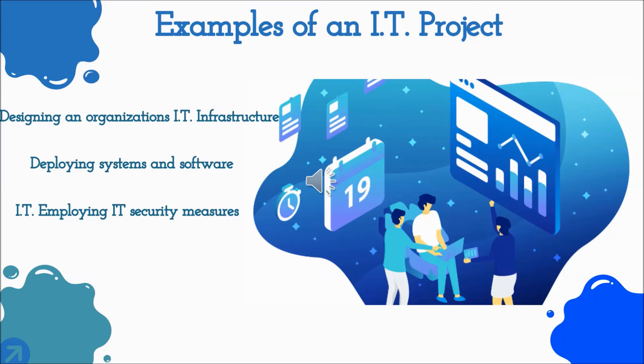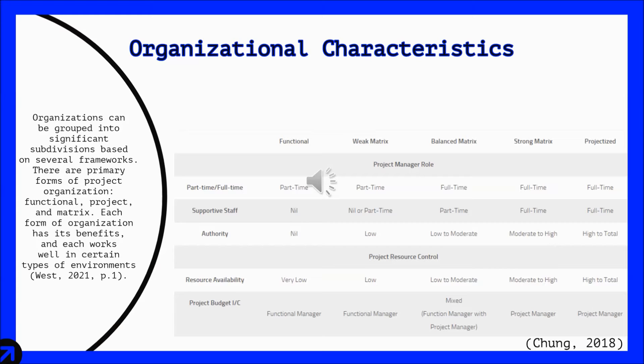Here are three examples of an IT project. One is designing an organization's IT infrastructure. Two is deploying systems and software. Three is employing IT security measures. Organizational characteristics have five primary forms of project organizations which are functional, weak matrix, balanced matrix, strong matrix, and projectized. Each form has its own benefit and works differently.